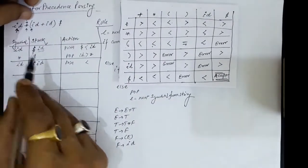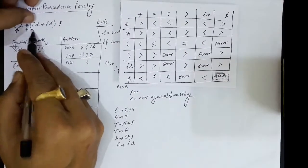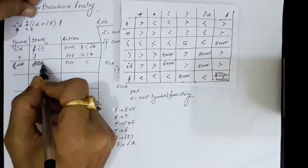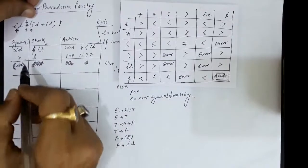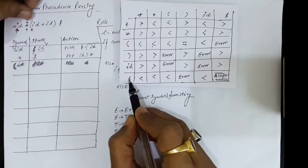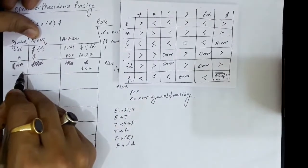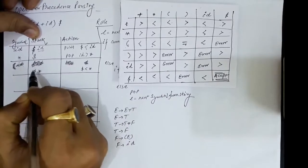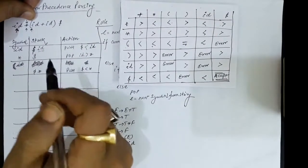We then check the precedence of multiplication. By the time it is not pushed on the stack we keep checking the precedence. Dollar and multiplication sign is the next precedence we check — dollar has less precedence than the multiplication sign, so the multiplication sign will be pushed on the stack. Now the stack contains dollar and multiplication sign.